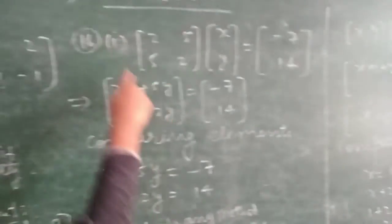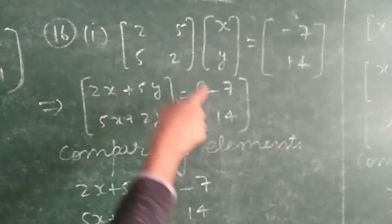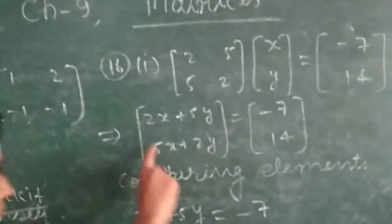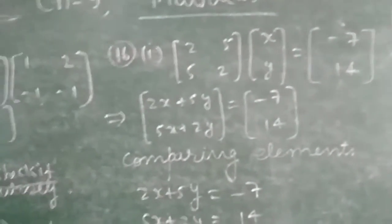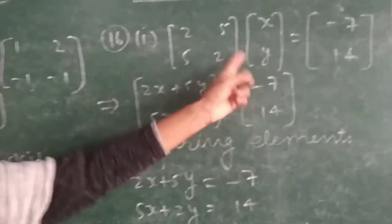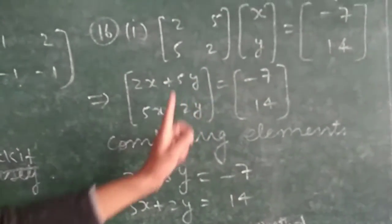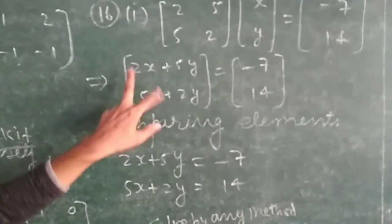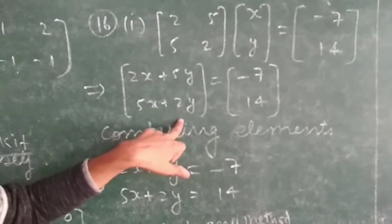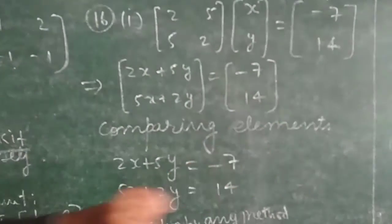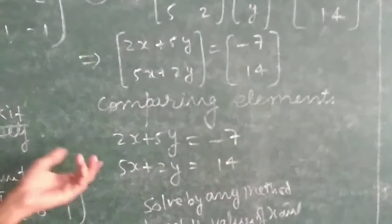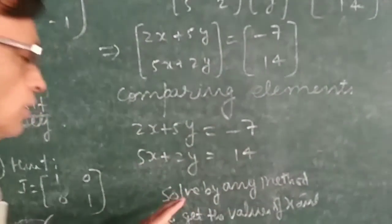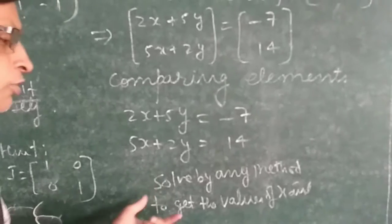Now the next question is 16, first part. The first matrix is [2, 5; 5, 2] and the second matrix is [x; y], given equal to [-7; 14]. After multiplying — you know how to multiply matrices — we get 2x plus 5y in the first row and 5x plus 2y in the second row, which equals -7 and 14. Comparing corresponding elements: 2x + 5y = -7 and 5x + 2y = 14. Now you have to solve it yourself to find the value of x and y.